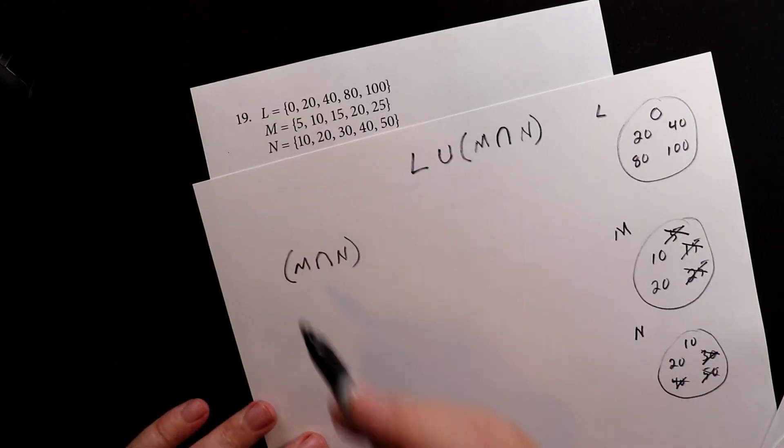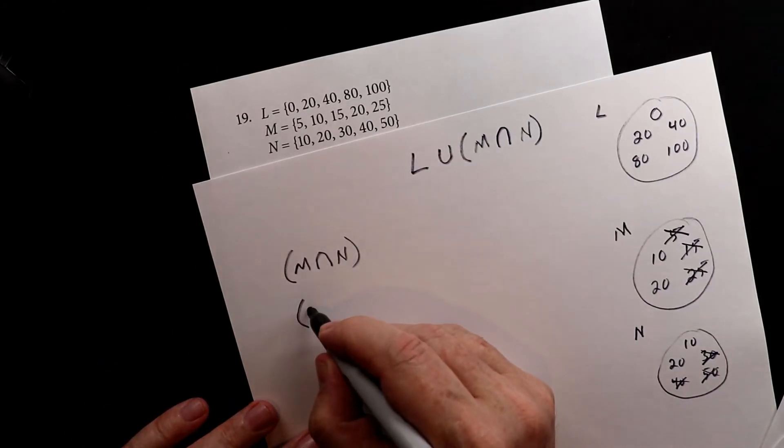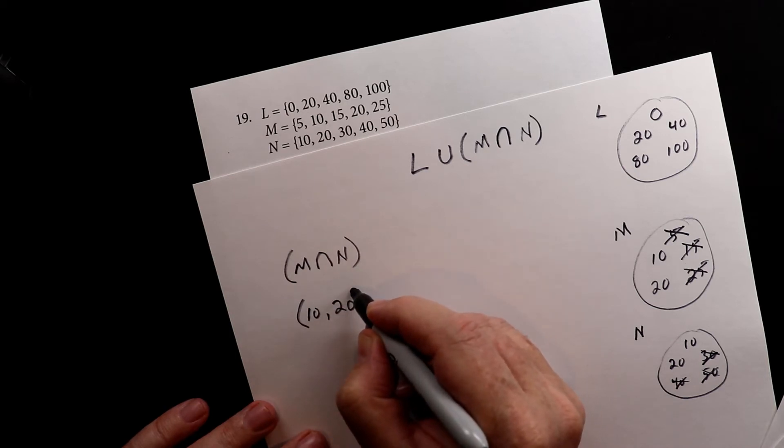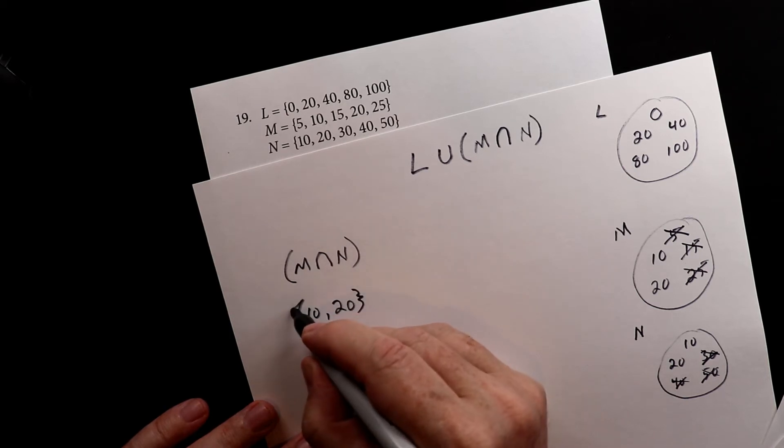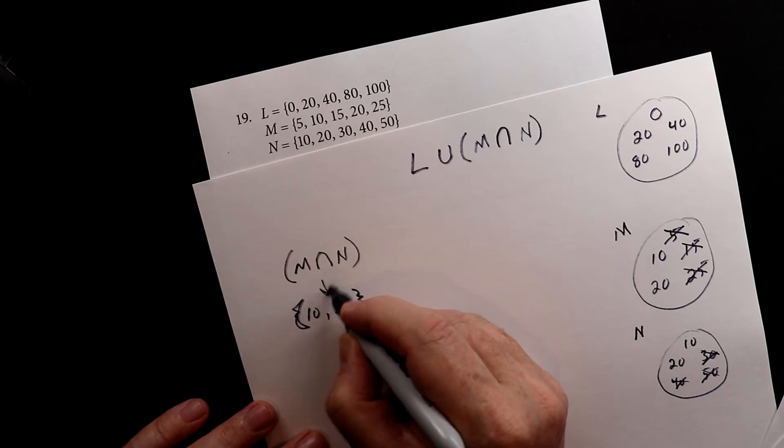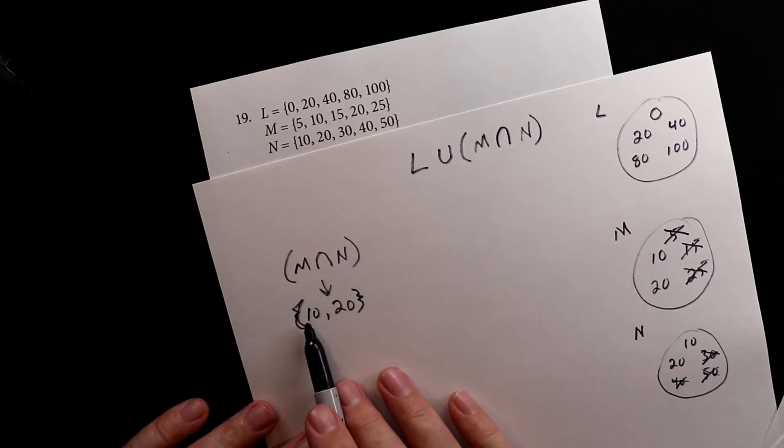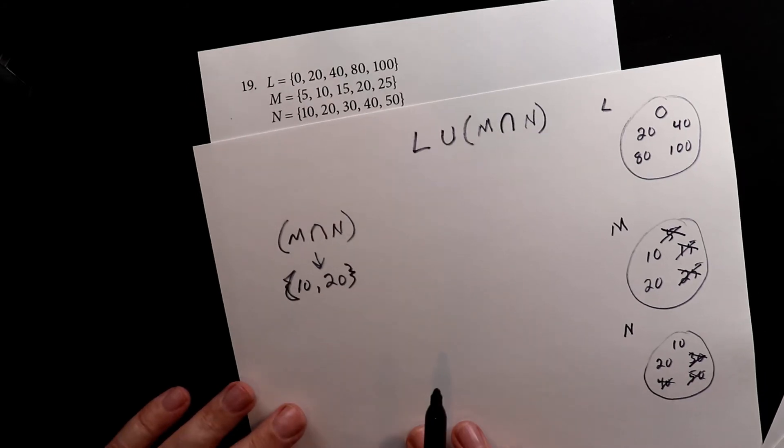So that's the intersection. So this is 10 and 20. The intersection of M and N is the set of 10 and 20. Okay.